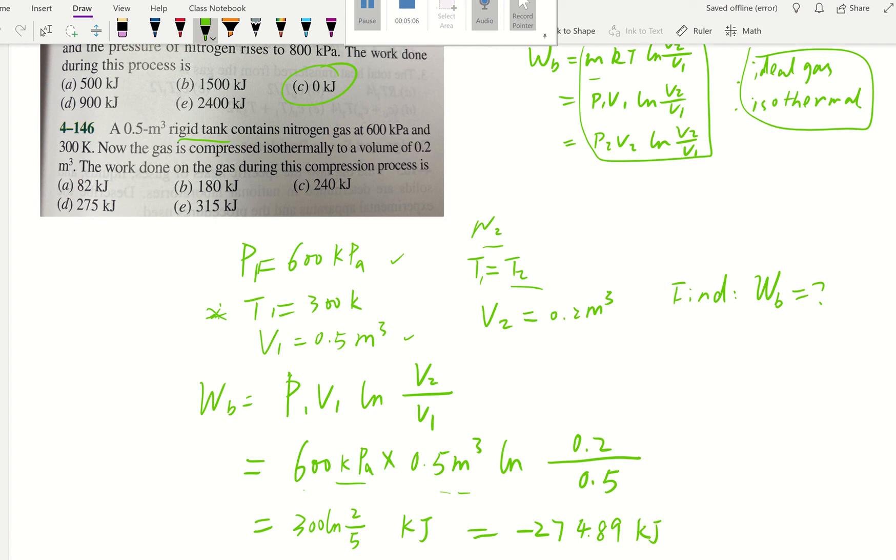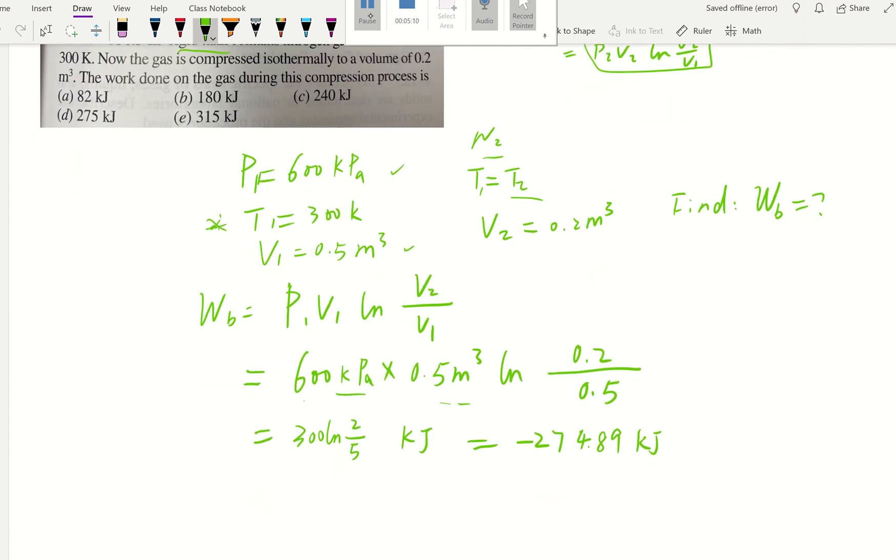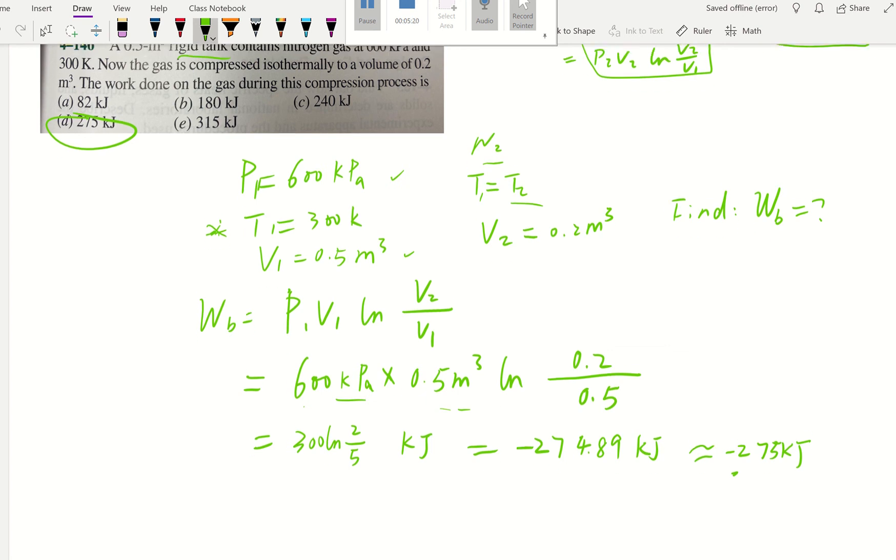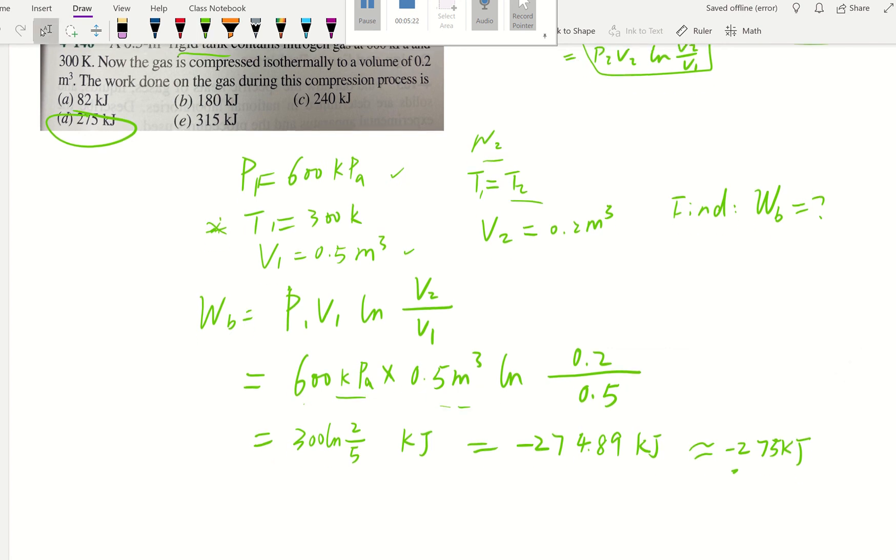So first of all, round it up. That's going to be negative 275 kJ. And how do we deal with negative? Obviously that would be D, but they don't have negative value. Now let's think about our sign convention.